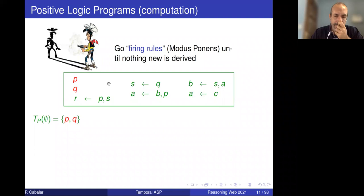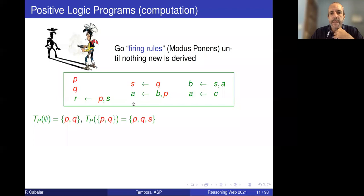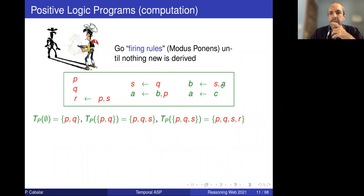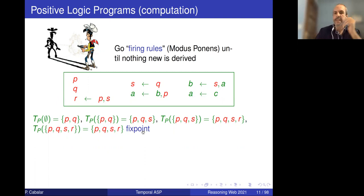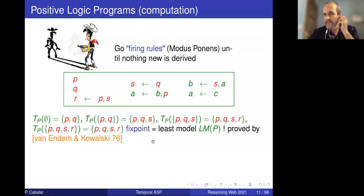Starting with facts P and Q, in the next step we look at which bodies become true. The body of S (which needs Q) becomes true, so we get P, Q, S. Then P and S together fire another rule and we get R. We reach the fixed point {P, Q, S, R} because A depends on B, B depends on A, and A depends on C — there is no way to fire those rules. The main theorem by Van Emden and Kowalski is that this least model coincides with this least fixed point.